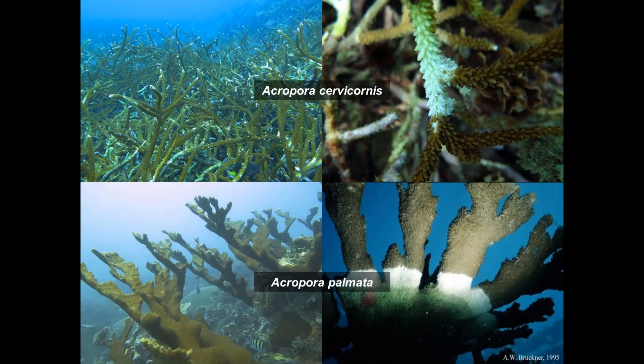White band disease affects the Caribbean Acroporids — Acropora cervicornis and Acropora palmata. In 1979, an outbreak of white band disease led to the loss, within about 10 to 15 years, of over 95% of these really important reef-building species throughout the Caribbean region. We do know that white band disease is bacterial because it can be stopped with antibiotics as well as through filtration.